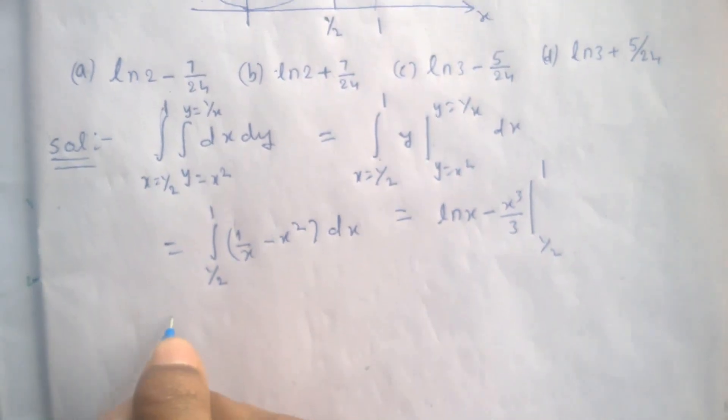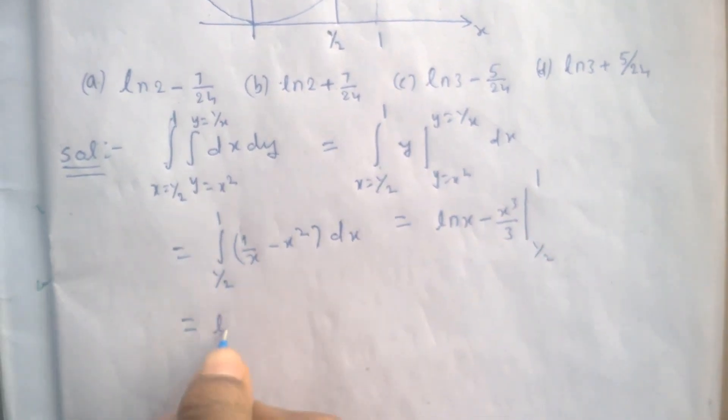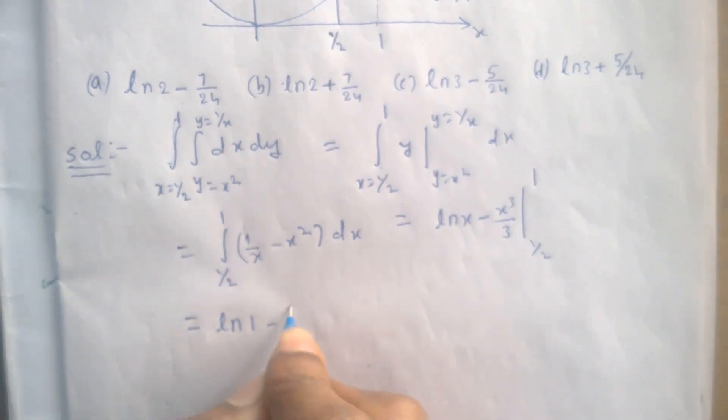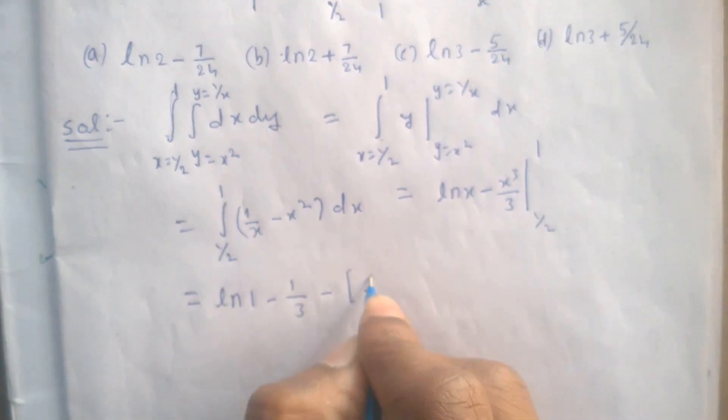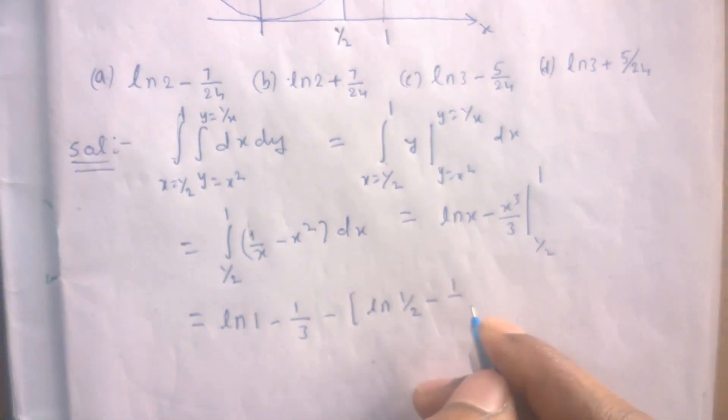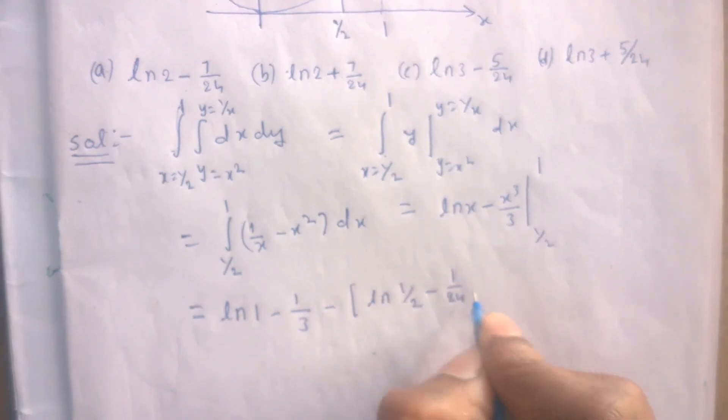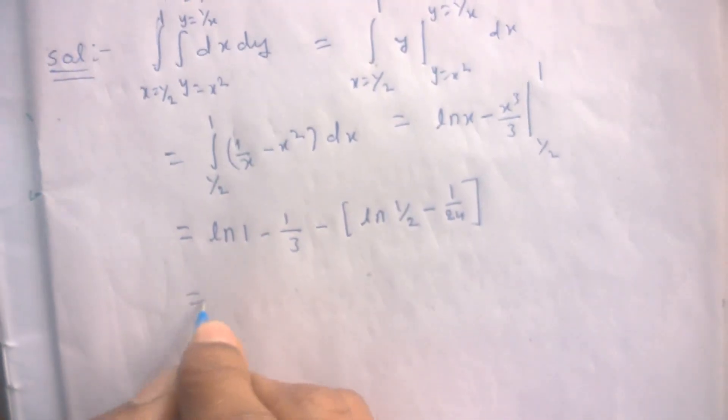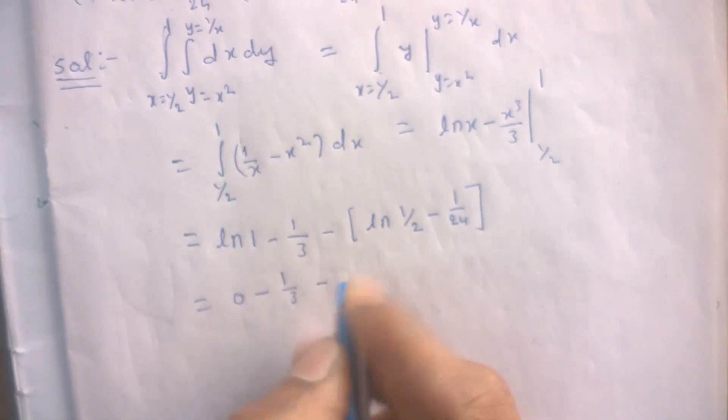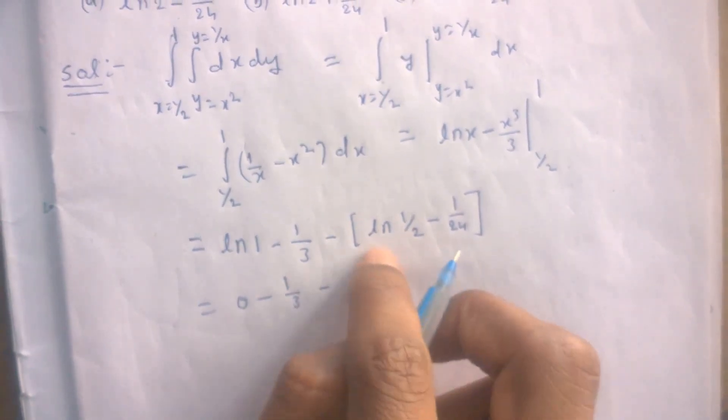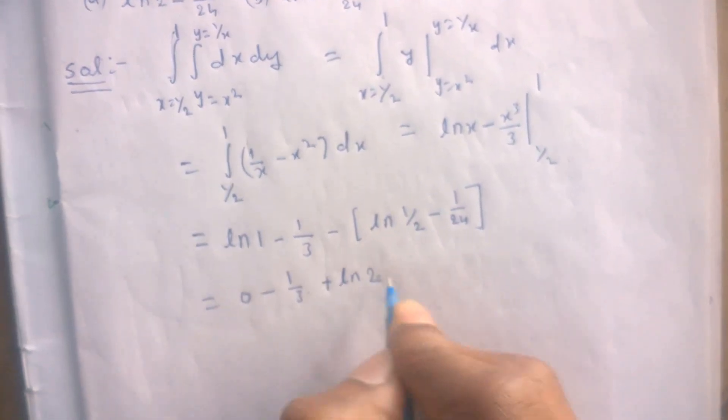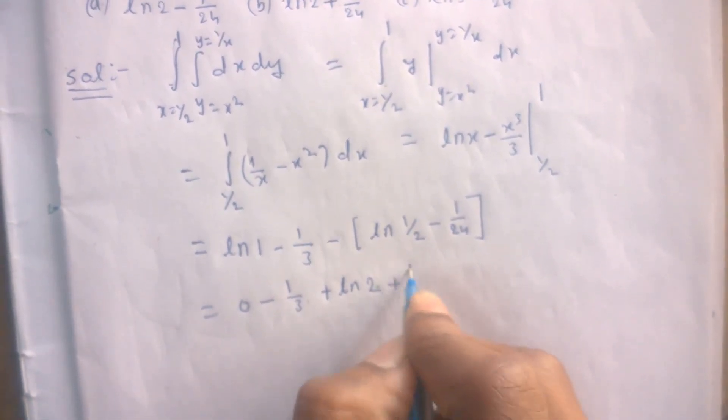Now log 1 minus 1 by 3, minus (log 1 by 2 minus 1 by 2 whole cube, which is 1 by 8 divided by 3, equals 1 by 24). Log 1 is 0, so 1 by 3 minus (minus log 2), minus into minus gives plus, plus 1 by 24.